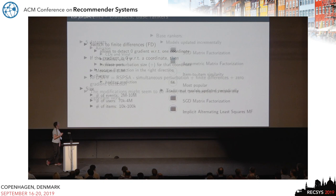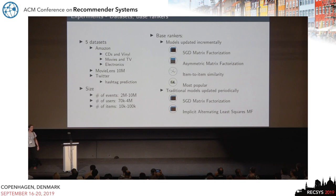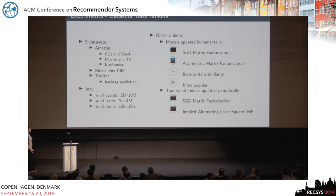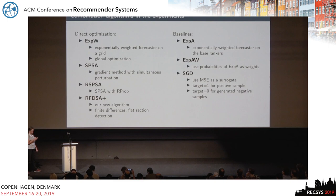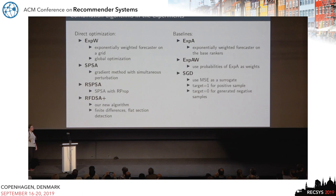For the experiments, we used five datasets of various sizes and six base rankers. The first four were updated incrementally: two types of matrix factorization, an item-to-item similarity model, and a popularity-based model; we also included two traditional matrix factorization models. The combination algorithms compared include the direct optimization methods already explained. Baselines include: XA, which uses an exponentially-weighted forecaster on the base rankers; XAV, which uses XA's probabilities as weights; and SGD, a gradient method using a mean square error surrogate.